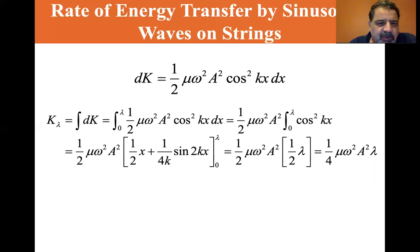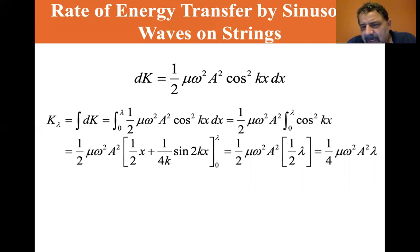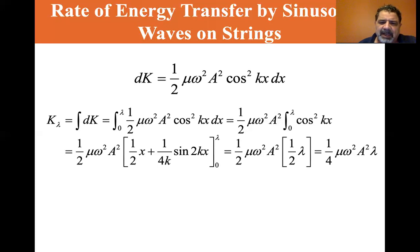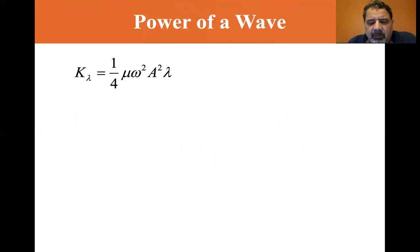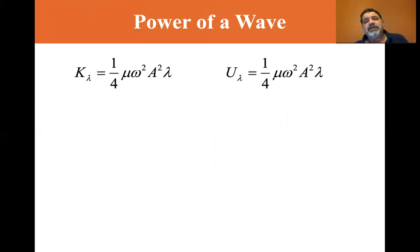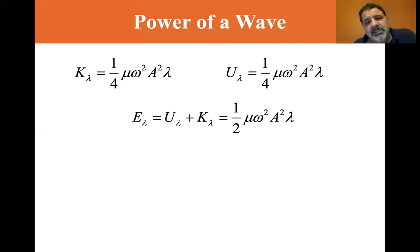Evaluating one-half μ ω² A² times [x/2 + sin(2kx)/(4k)] from zero to λ, the sine terms vanish and we get one-half μ ω² A² times λ/2, which equals one-fourth μ ω² A² λ. So K_λ equals one-fourth μ ω² A² λ. Going through a similar derivation for potential energy gives the same result: U_λ equals one-fourth μ ω² A² λ. The total energy is their sum: E_λ equals one-half μ ω² A² λ.